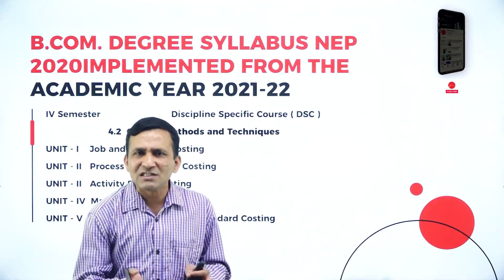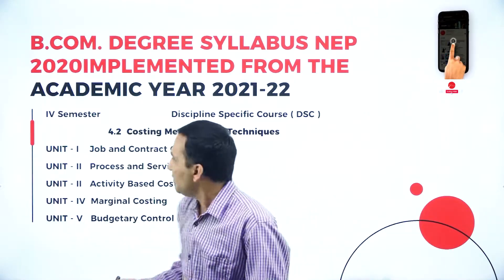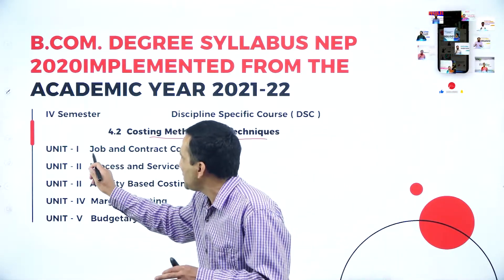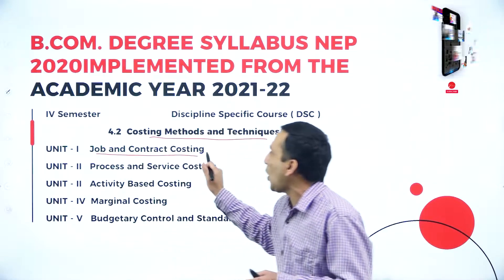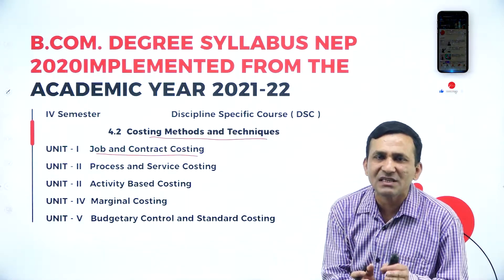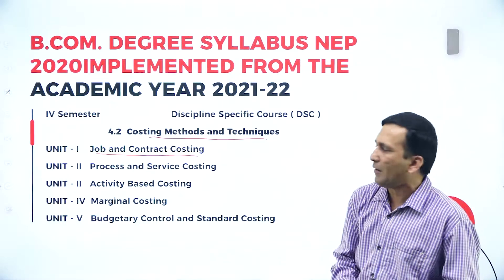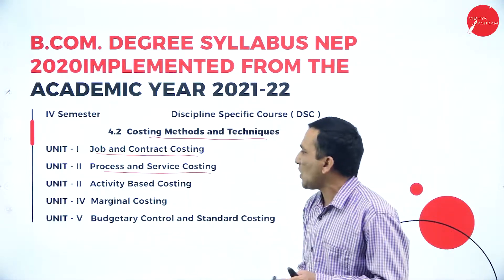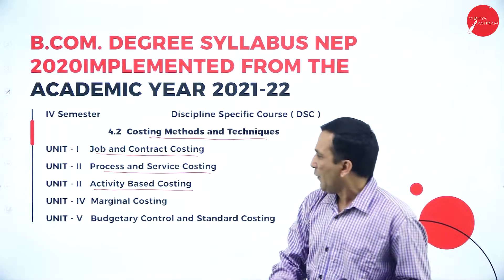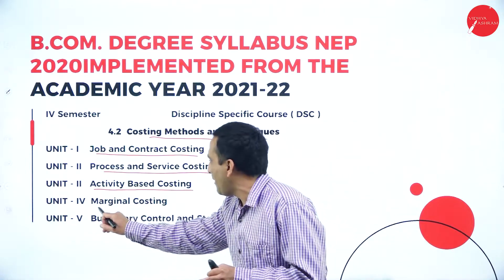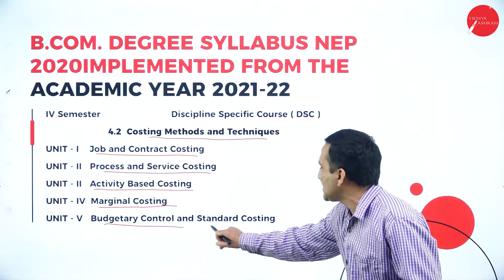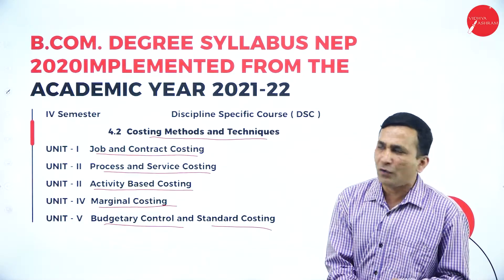According to the syllabus for fourth semester BCom, the costing methods and techniques course has five units. The first unit is related to job and contract costing, the second is process and service costing, the third is activity based costing, the fourth is marginal costing, and the last unit is budgetary control and standard costing.